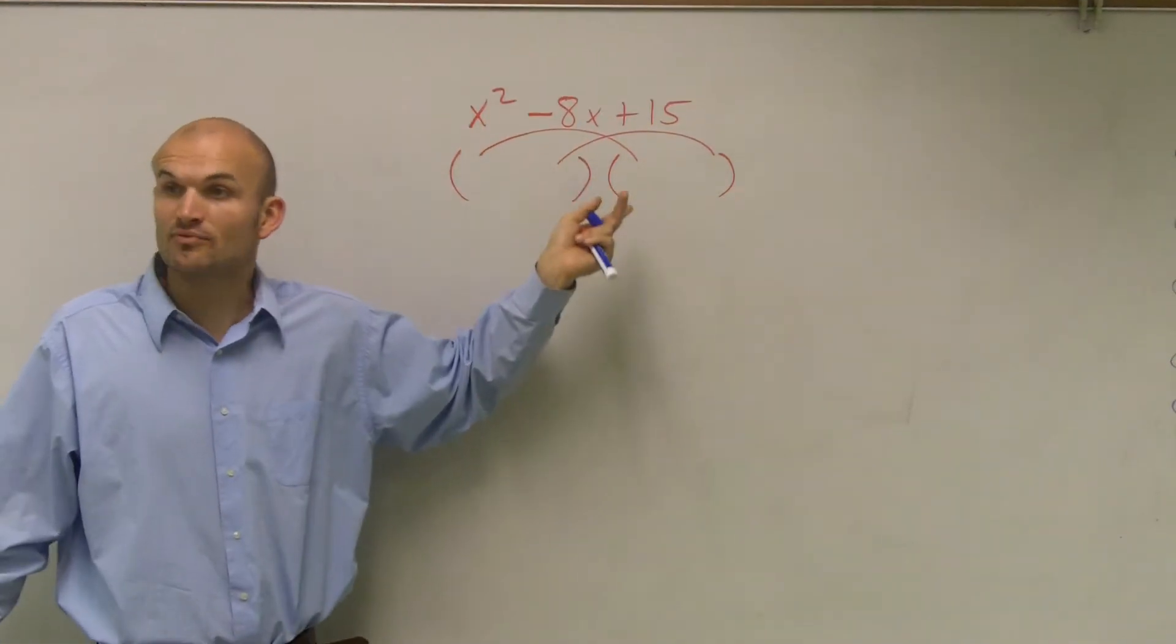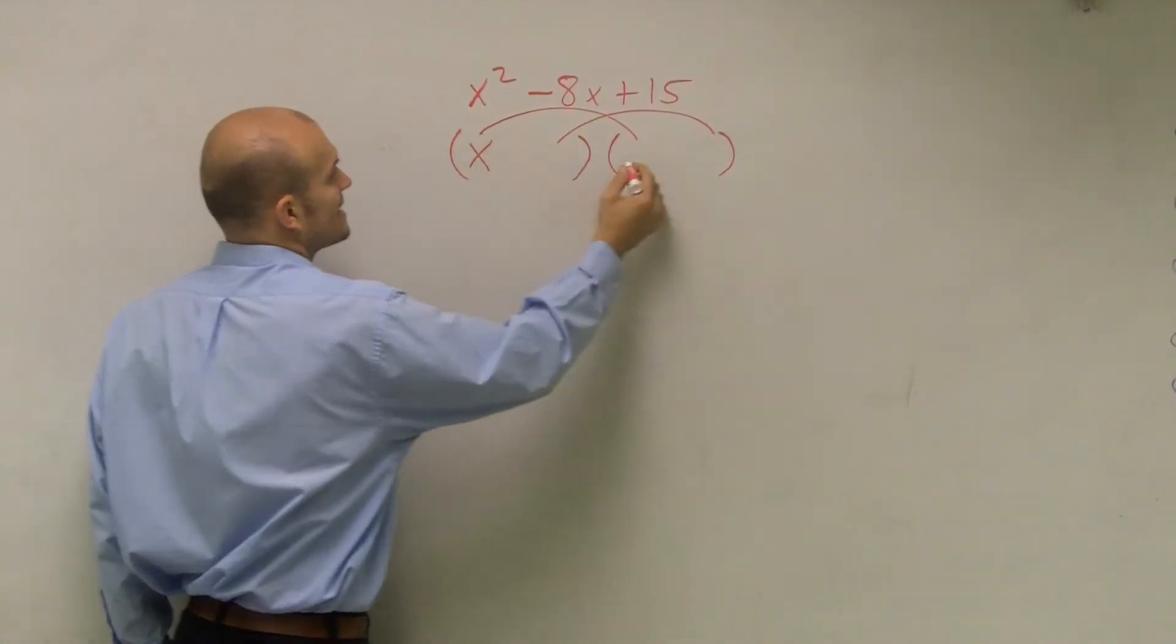So think of what two numbers in this case are going to provide us with x squared. Well, that's going to be x times x.